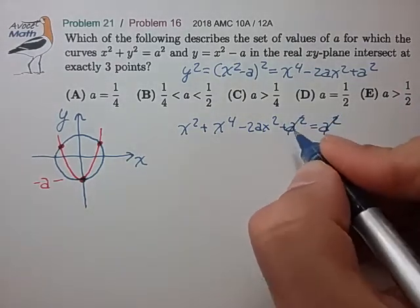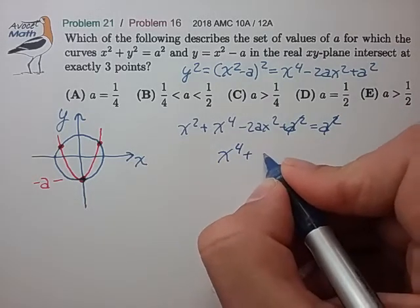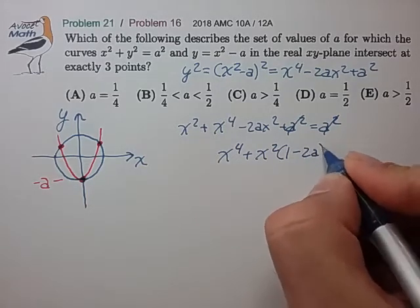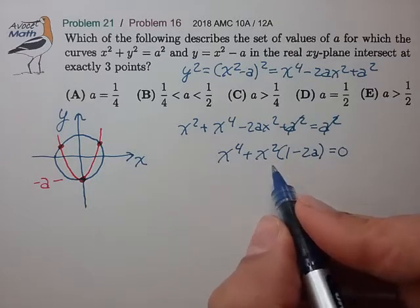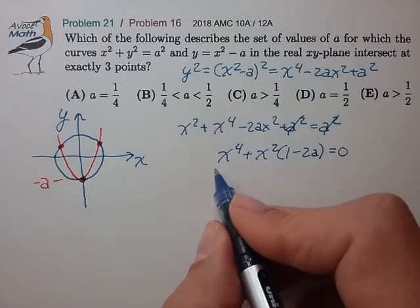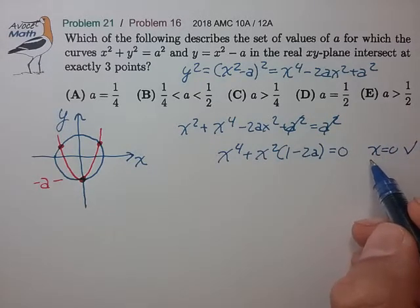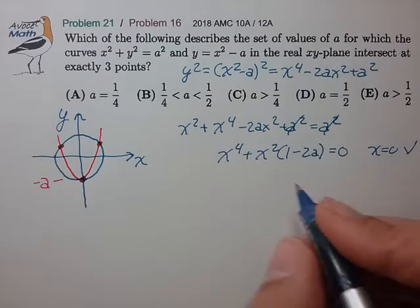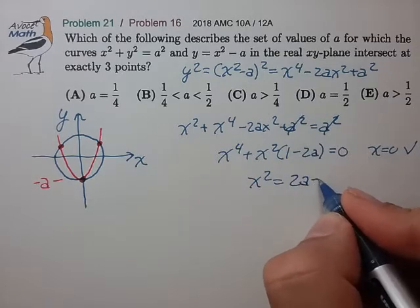It looks like the a squares drop out. Let's rearrange this just a little bit. Okay, so we have x to the fourth, x squared, and this gives a solution at x equals zero, which we know exists, so that checks out. And when x is not equal to zero, we can divide this out by x squared to arrive at x squared is equal to 2a minus one.